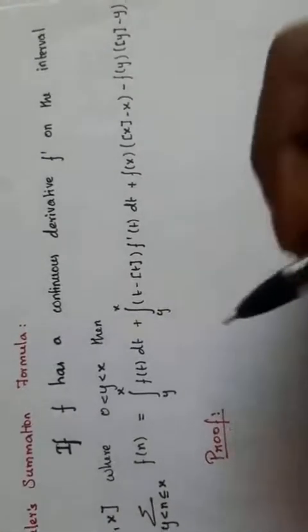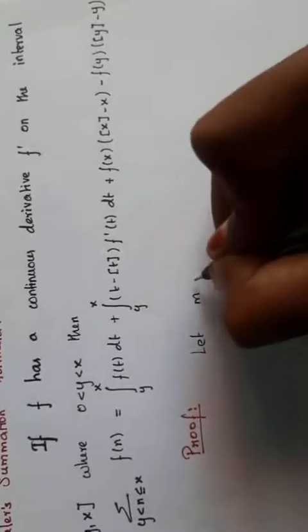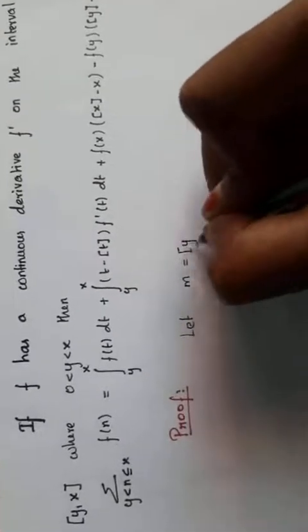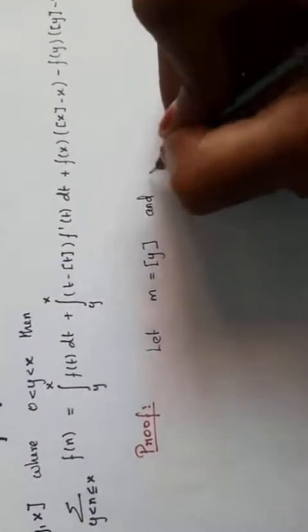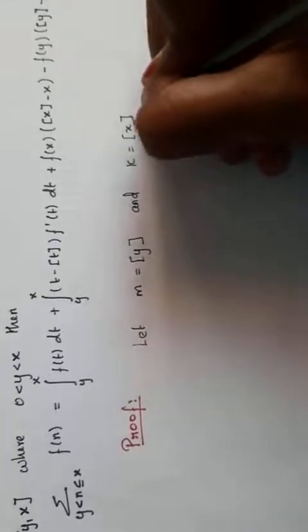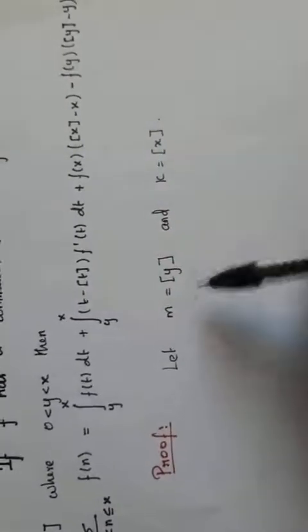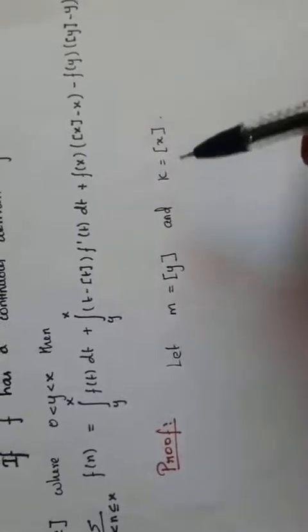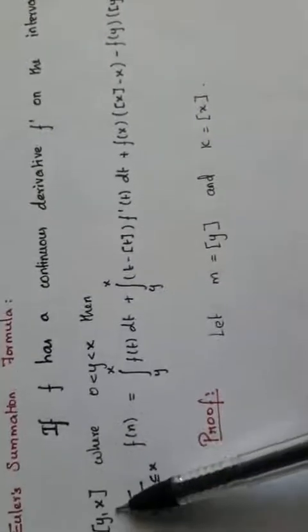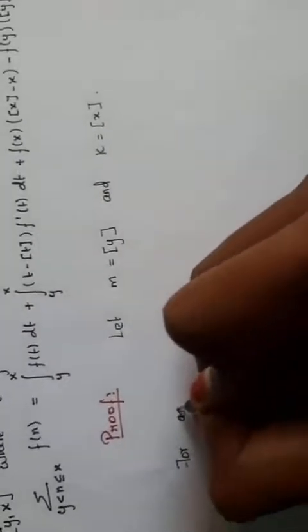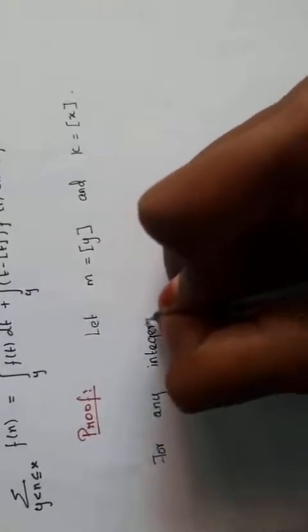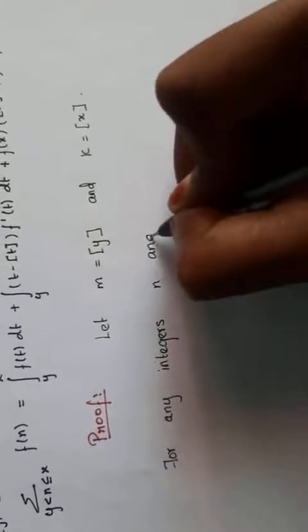Before entering the proof, let's take m = ⌊y⌋ and k = ⌊x⌋. I will denote the greatest integer less than or equal to t as ⌊t⌋ (box t) for convenience. Next, I am going to take any two consecutive integers n and n-1 within the closed interval [y, x].